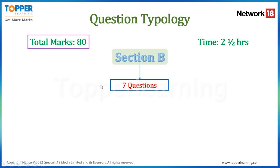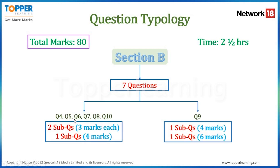Section B has 7 questions divided into 2 groups. The first group — Questions 4, 5, 6, 7, 8, and 10 — will have 2 sub-questions of 3 marks each and 1 sub-question of 4 marks. Question 9 will have 1 sub-question of 4 marks and another of 6 marks. So 6 out of 7 questions have 3 sub-questions (2×3 marks + 1×4 marks), and 1 question has 2 sub-questions (4 marks + 6 marks).